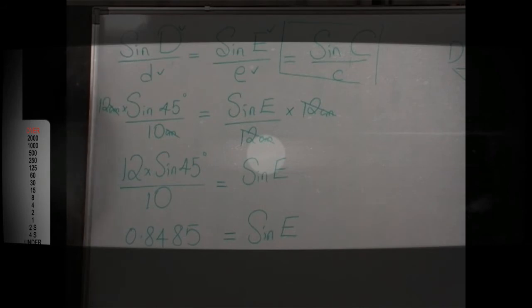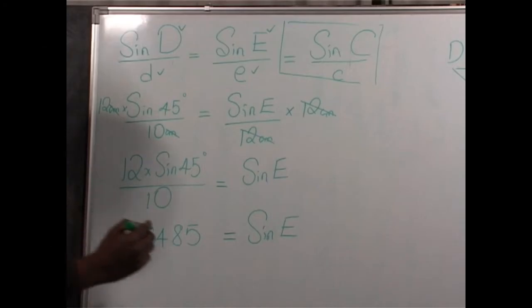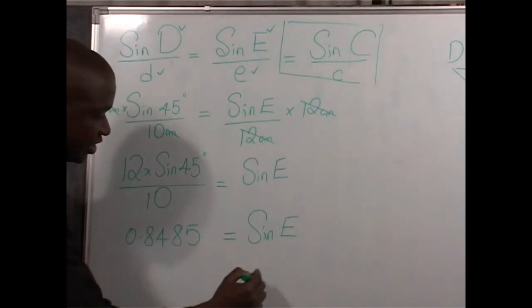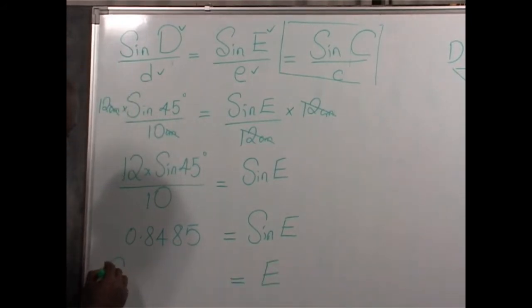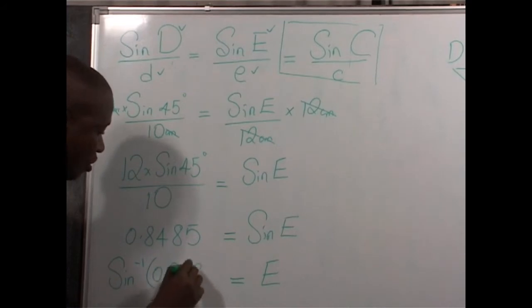But what we have been asked to find is not the sine of angle E, but the angle E itself. Meaning, at this point, we need to introduce the sine inverse operation. So that on the right-hand side, we will remain with E.